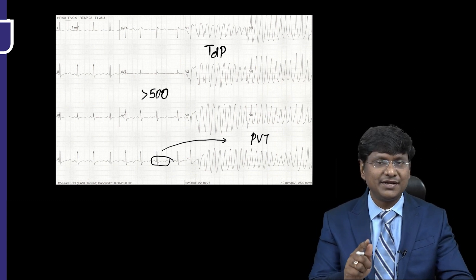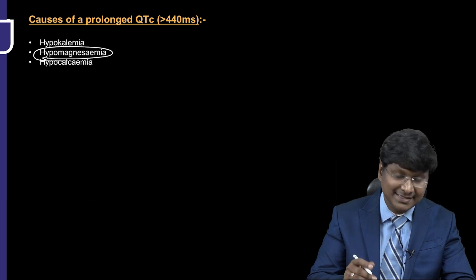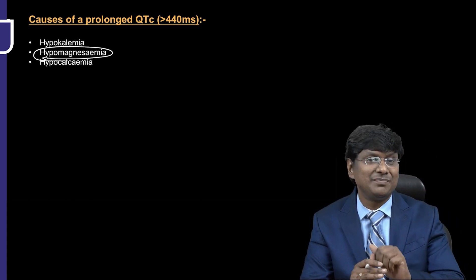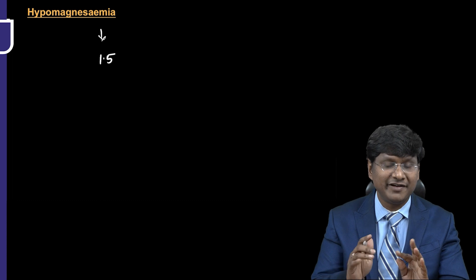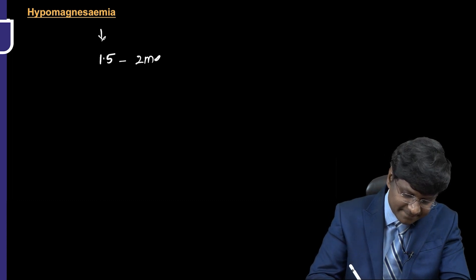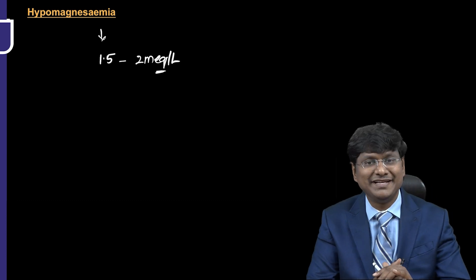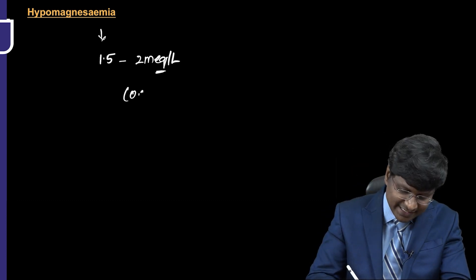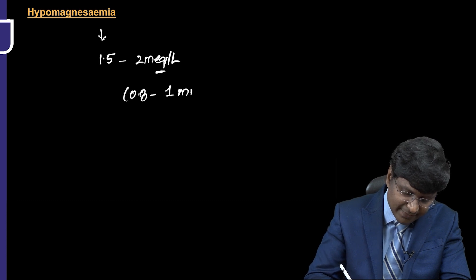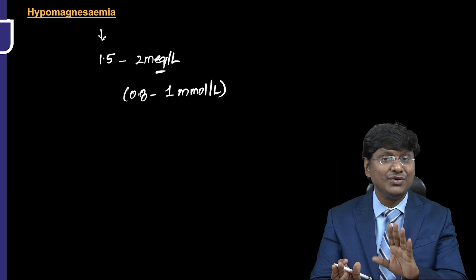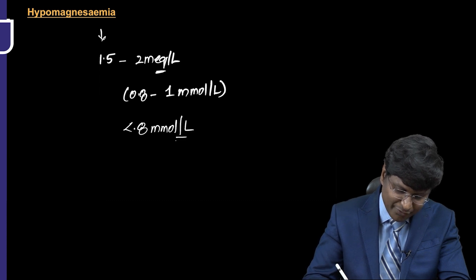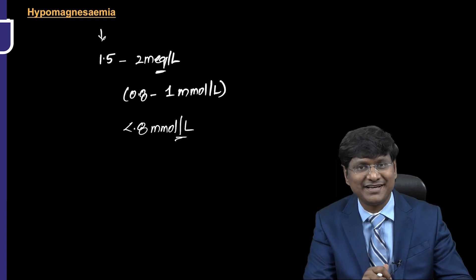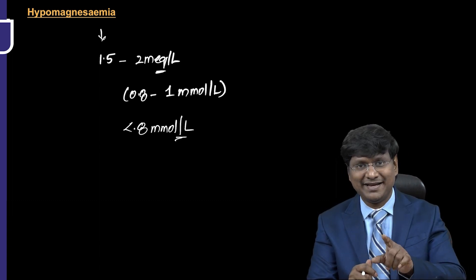Apart from hypokalemia and hypocalcemia, the other electrolyte abnormality causing QT prolongation is hypomagnesemia. Normal magnesium levels are around 1.5 to 2 milliequivalents per liter, or 0.8 to 1 millimole per liter. When magnesium falls below 0.8 millimoles per liter, QT prolongation related to hypomagnesemia occurs.